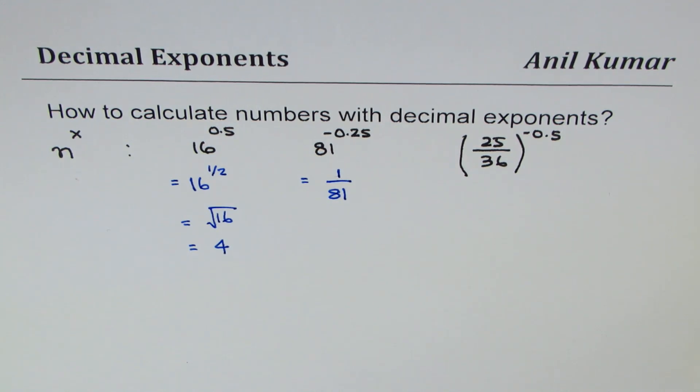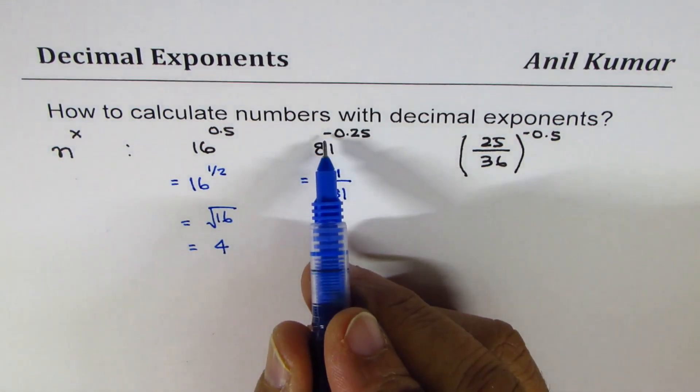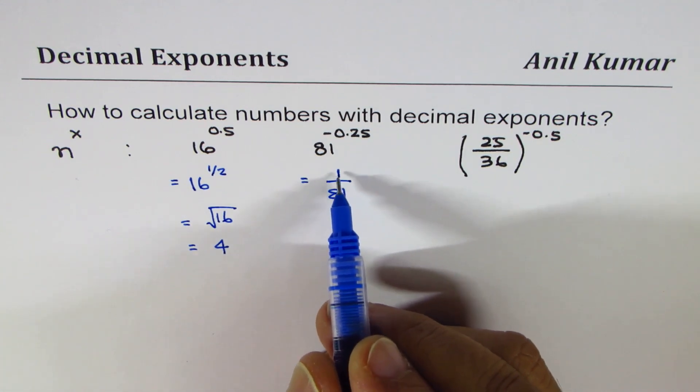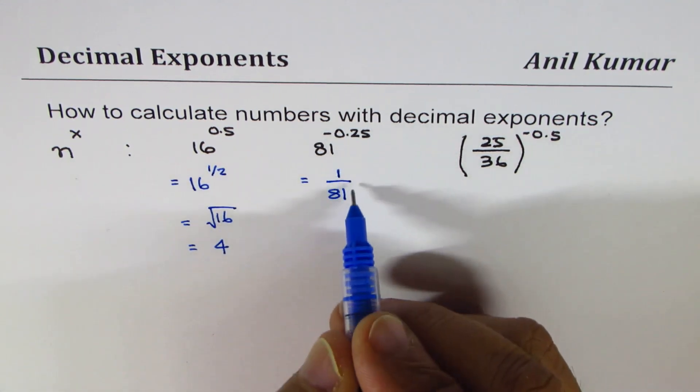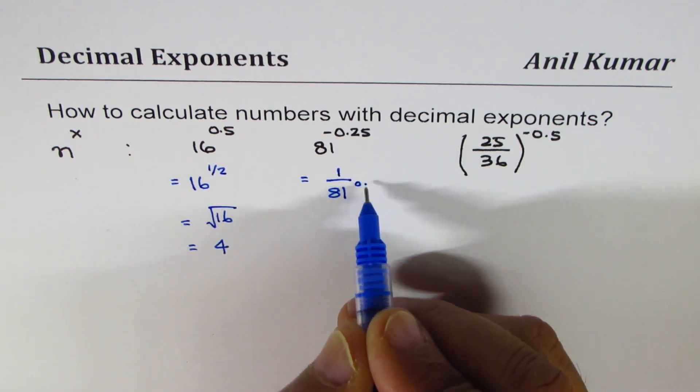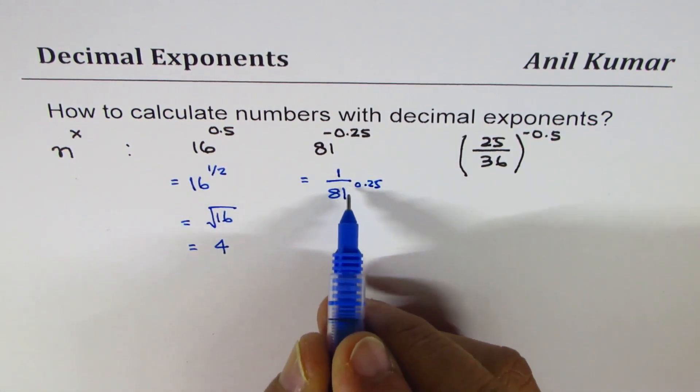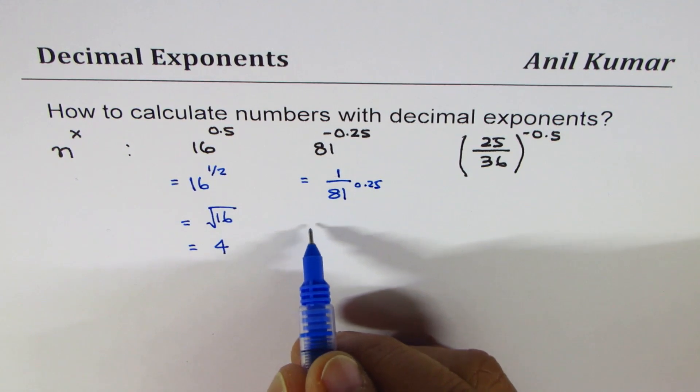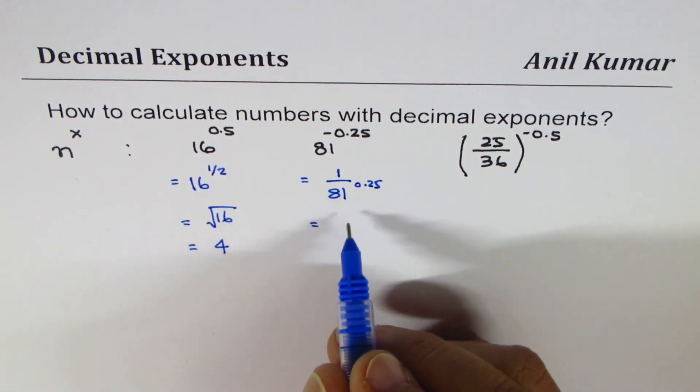Negative makes it reciprocal, that means 1 over 81, so the exponent remains at 0.25. Now 0.25 is like quarter, so what we are looking for here is fourth root of 81.